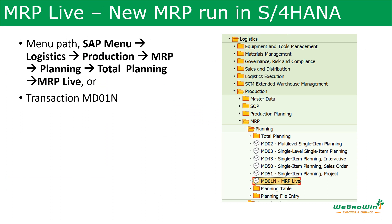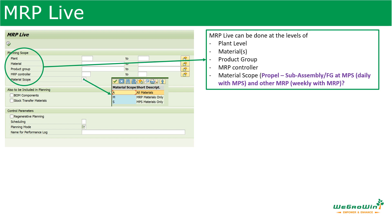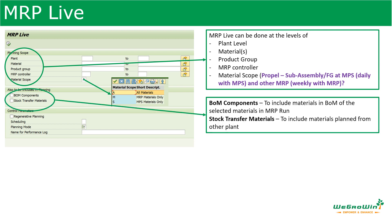Now we are looking at the new MRP called MRP live. The transaction to run this is MD01N. MRP live can be run with different selection parameters like plant, materials, product group, MRP controller, and material scope like MPS or MRP. The material scope here means all materials, MRP only, or MPS only. There is also an option whether to include BOM-selected materials and stock transfer materials in the MRP run.